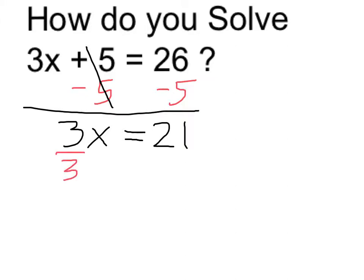Now I can divide both sides by 3 to undo the multiplication by 3 on the left. And that leaves me with x equals 21 divided by 3, which is 7.